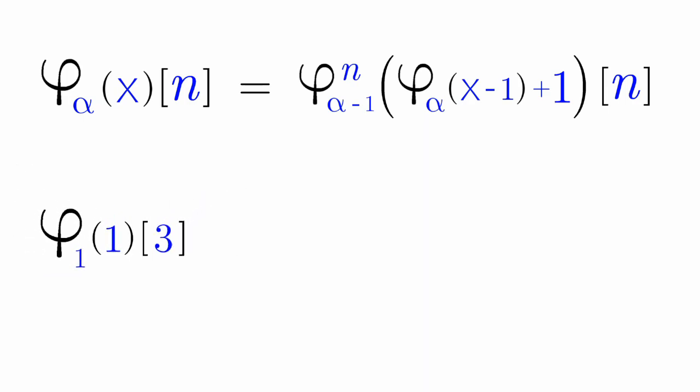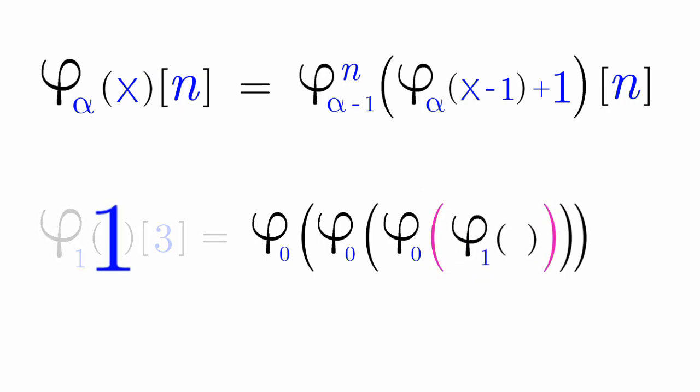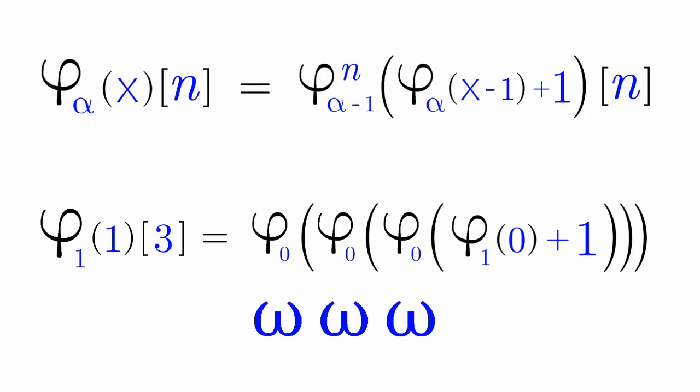Let's have Phi 1 1 of 3. We do 3 copies of the Phi 0 function. And inside this parenthesis, we do Phi 1. Because we have 1 as our value of X, it reduces into a 0, and then we add a plus 1. As you can see, this resembles Omega to the Omega to the Omega to the Epsilon 0 plus 1.